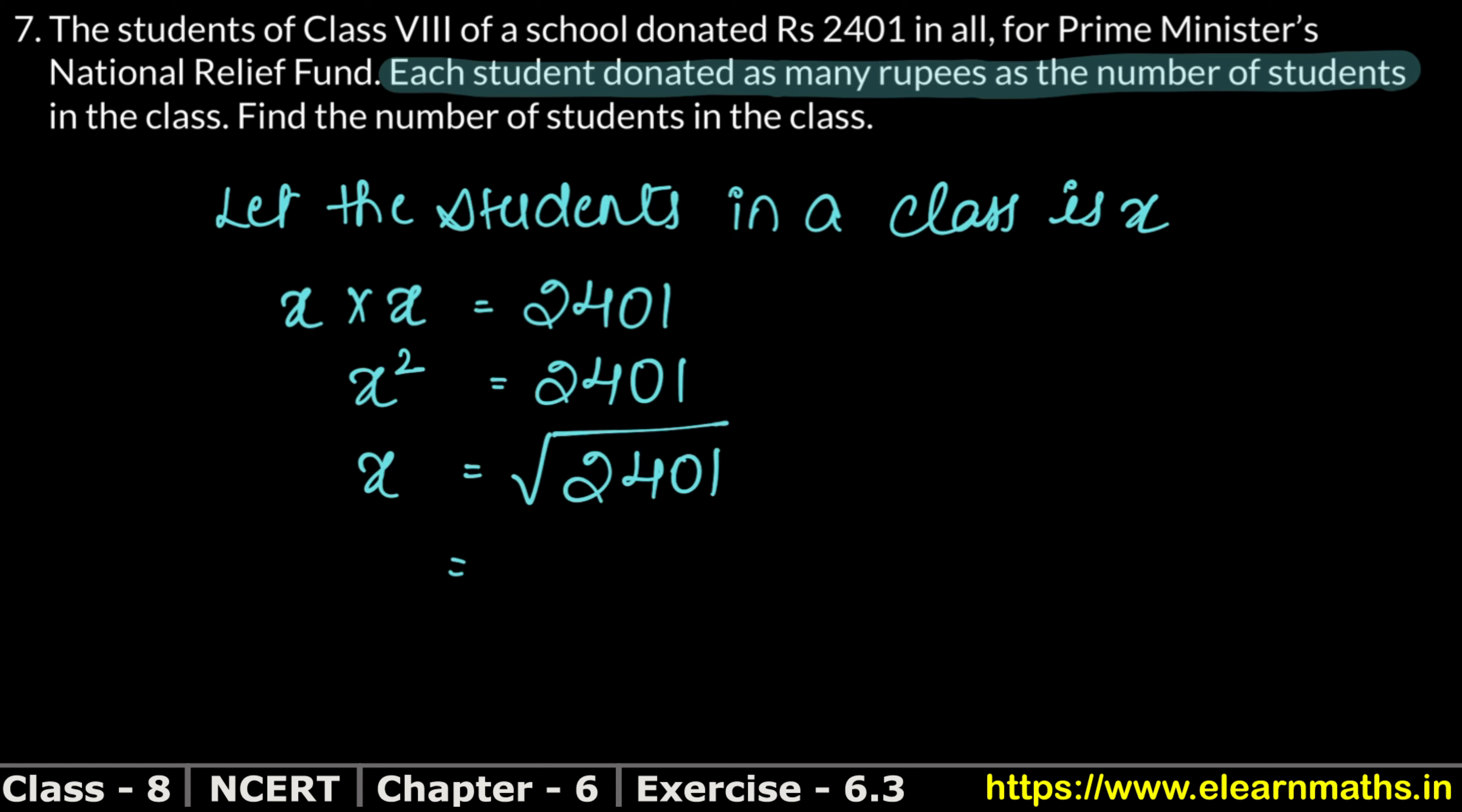We can use the prime factorization or division method. In this case, division method is best. So we have made 2 pairs. Now we know that 4 times 4, because 5 times 5 will be 25 and it will be more than 24. 4 times 4 is 16. So that is 8, 0, 1. Now 4 plus 4 is 8.